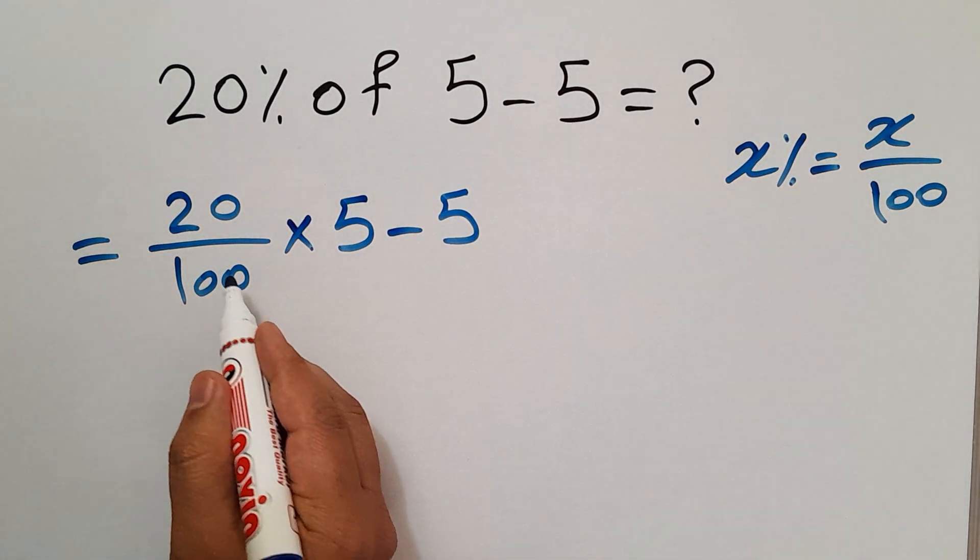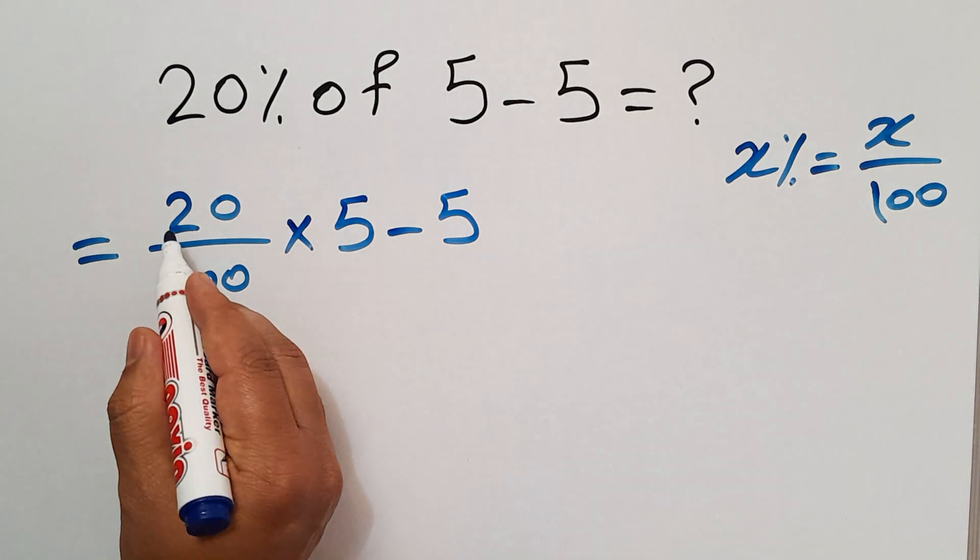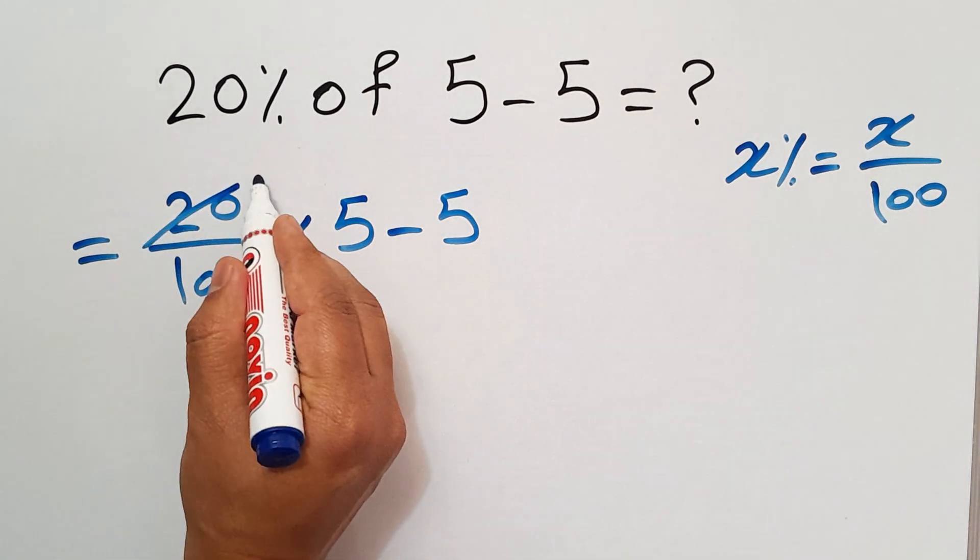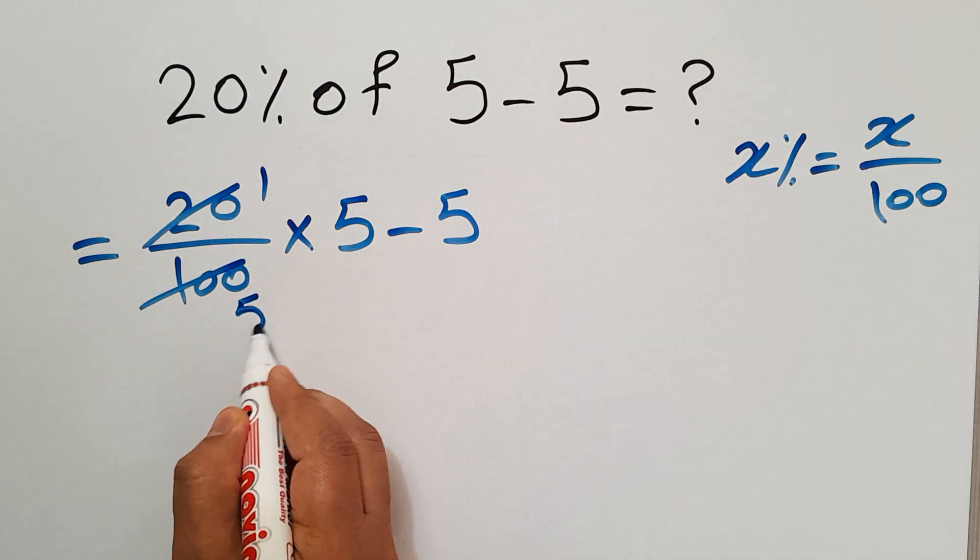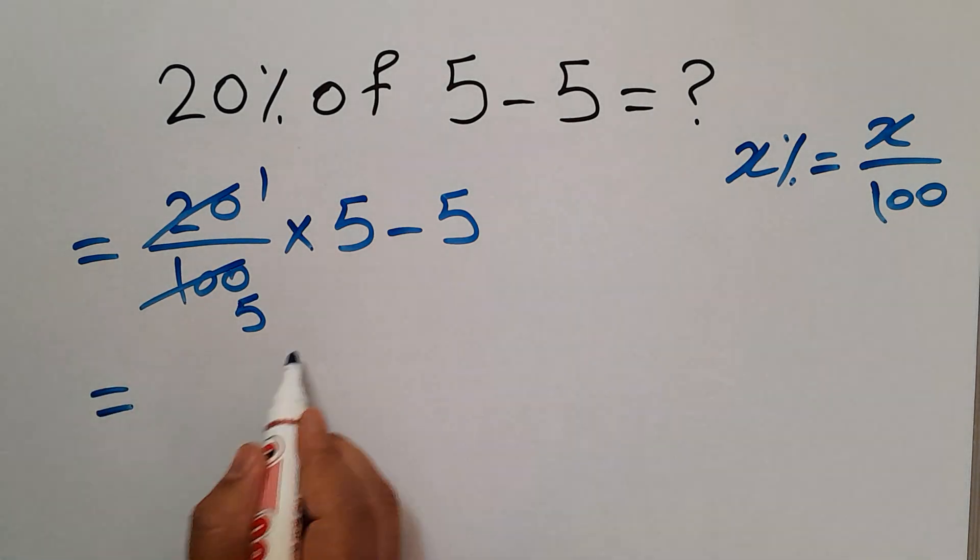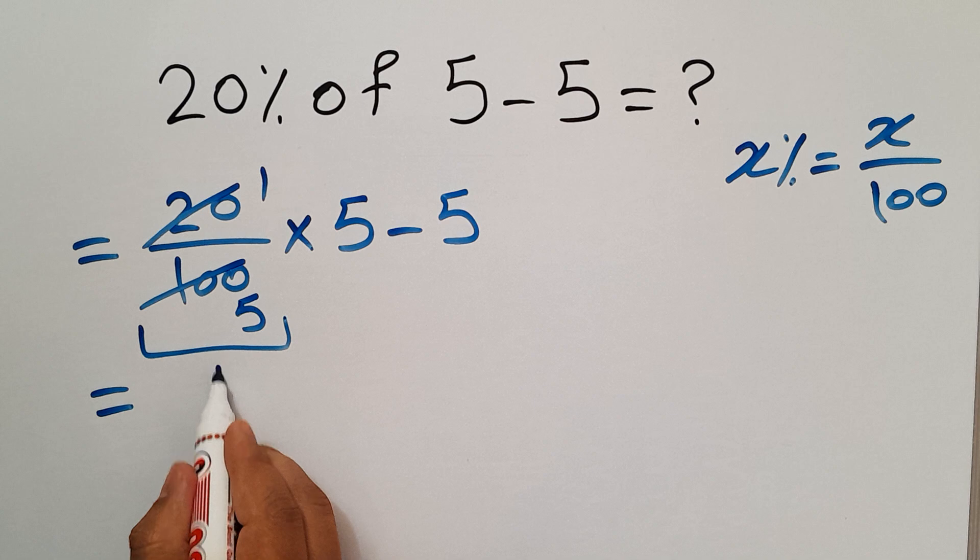Now here, 20 divided by 20 equals 1, and 100 divided by 20 equals 5. So we have 1 over 5 times 5 minus 5.